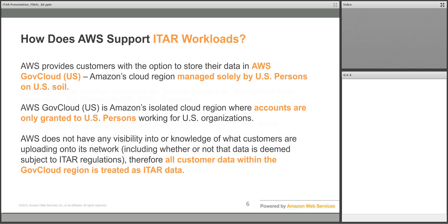So how does AWS support ITAR workloads? AWS provides customers with the option to store, share, and work with their data in AWS GovCloud US, Amazon's cloud region managed solely by US citizens on US soil. AWS GovCloud is Amazon's isolated cloud region where root accounts are only granted to vetted US persons working for US organizations. Since AWS does not have any visibility into or knowledge of what customers are uploading into its network, including whether or not that data is deemed subject to ITAR regulations, AWS treats all customer data within the GovCloud region as ITAR data.